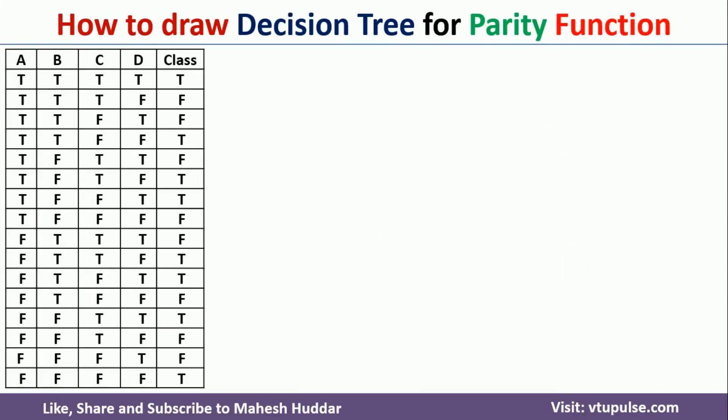In parity function, if you have an even number of T's, then the class will be T. If you have an odd number of T's, if you look at here 1, 2, 3, odd number of T's are there, the class will be false here.